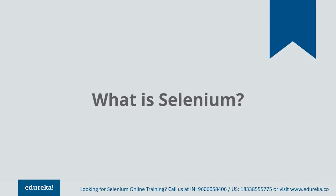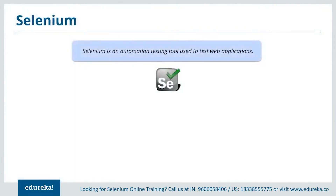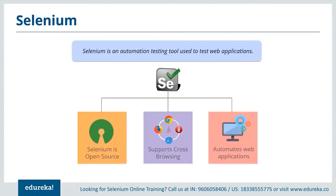Selenium is an automation tool used to test web applications. It is of great importance because it makes the process relatively easy by providing valuable functionalities and libraries that help in testing any software or web application. Selenium is an open source portable framework used to automate test cases in a web application. It can run on different browsers like Chrome, Safari, Opera, Explorer, and supports cross-browser testing. It supports different programming languages like Java, Python, Ruby, C#, etc., with Java being the most commonly used due to its user-friendly behavior.